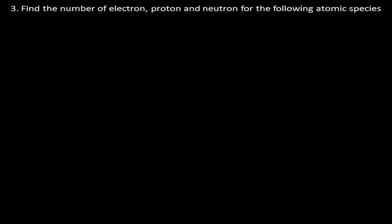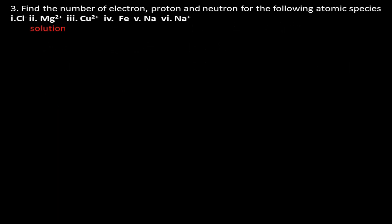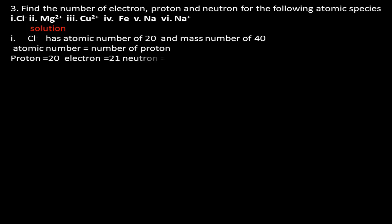Problem 3(i): Find the number of electrons, protons, and neutrons for the chlorine ion (Cl⁻). From the periodic table, chlorine has atomic number 20 and mass number 40, so proton number = 20. Since chlorine is an anion that gained one electron, electron count = 20 + 1 = 21. Neutron number = mass number − proton number = 40 − 20 = 20.